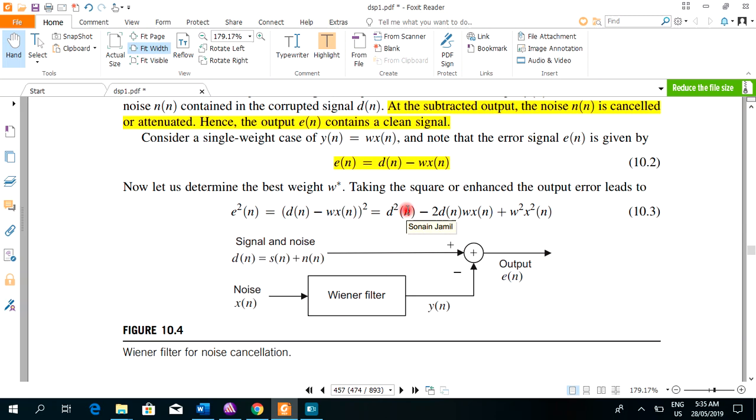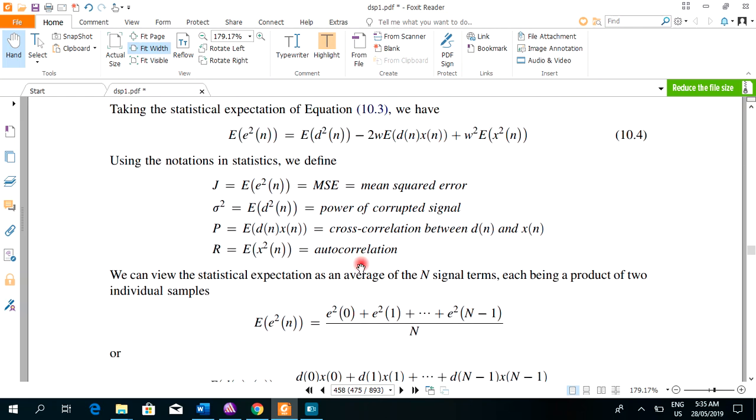Now, let's determine the best W, best weight. If we take square of this error, we can get the quadratic equation. And then, taking the expectation or mean of the squared error, we get the following equation. This is the simple formula of A minus B whole square, which comes out to be A square minus 2AB plus B square.